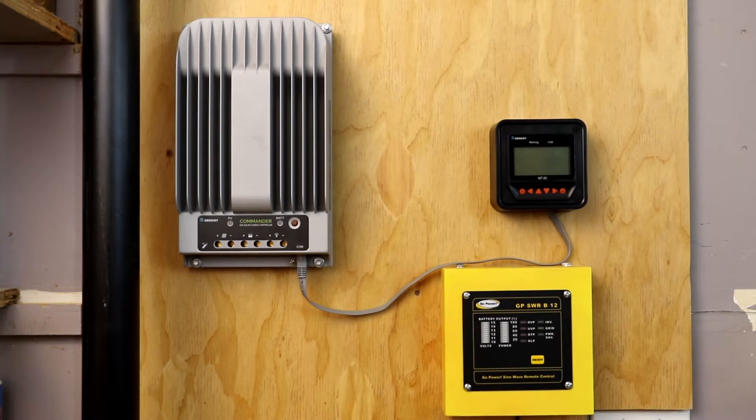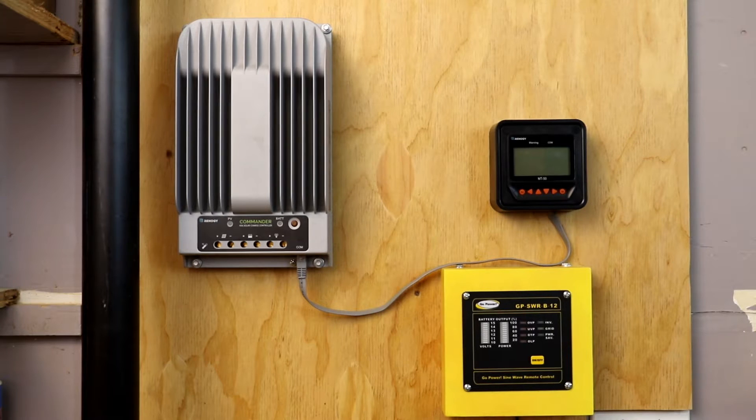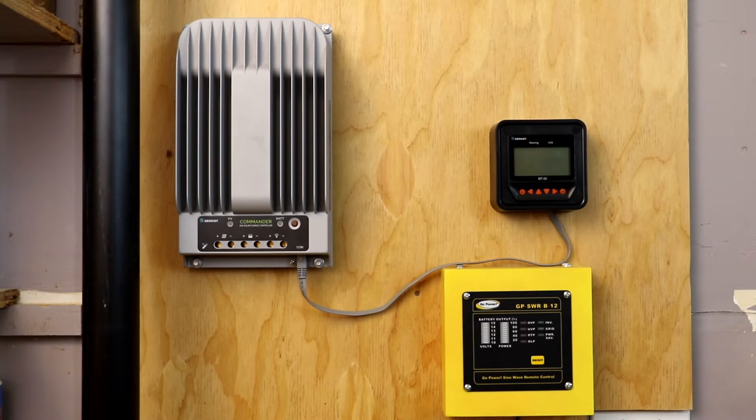A quick update on the solar project. Recently I got the charge controller and its matching meter. The meter is the Renogy MT50 and the charge controller is the Renogy 40 amp commander unit.